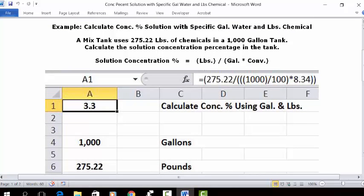You can open up a blank spreadsheet, put your cursor in C1 if you like and type 'calculate concentration percentage using gallons and pounds.' In A1, you can set it as whole numbers with one decimal and have it bold and centered.